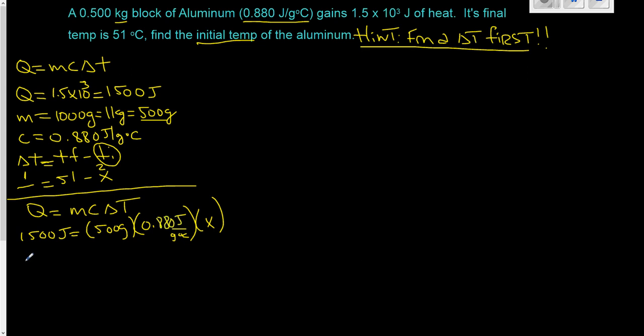So, let's have a peek here. So we have 1,500 joules, and 500 times decimal 880 is going to give us 440, these grams cancel, joules over degrees Celsius, times X. We are going to divide through by 440 joules degrees Celsius. And what we do to one side of the equation, what we do to the other side. This cancels.